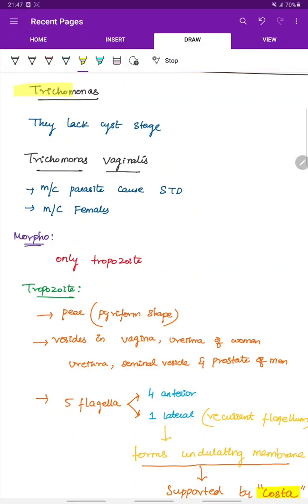Let's see about Trichomonas, which is a flagellate. The characteristic feature of Trichomonas is that they lack the cyst stage. So there is only trophozoid form seen in Trichomonas.